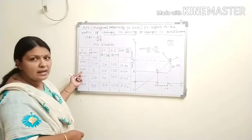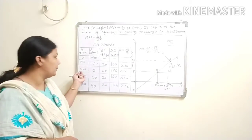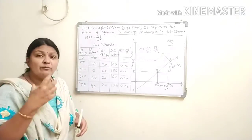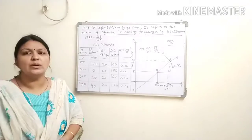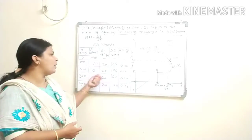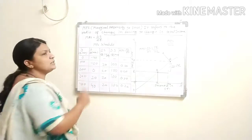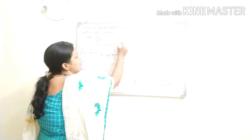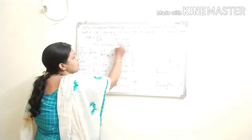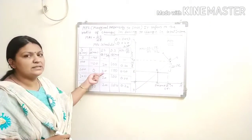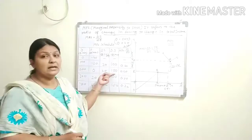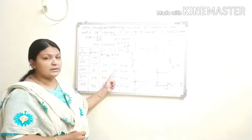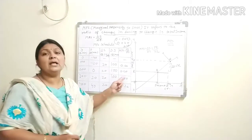Now income increases by another 100 rupees to 200 rupees. Your saving is now 0, meaning whatever you earn, your consumption expenditure is also 200 — no saving. The change in saving: 0 minus minus 20 gives delta S equals 20. Change in income: 200 minus 100 gives delta Y equals 100. So MPS equals 20 upon 100, again 0.20.